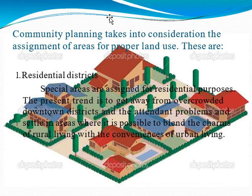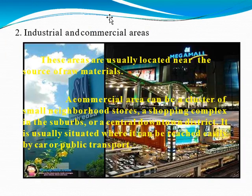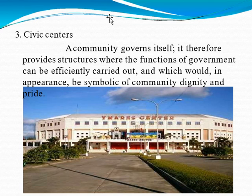There is a structure or theory to follow in creating art. For example, planning a residential district requires a certain amount of space to be occupied and some not to be occupied, in order to avoid crowding. Other examples include industrial and commercial areas, and civic centers. A civic center is a community that governs itself, providing a structure where government functions can be efficiently carried out, appearing symbolic of community dignity and pride. A good example is the architecture of government buildings, which are created in a way that presents integrity and majesty, symbolizing the government of the Philippines.